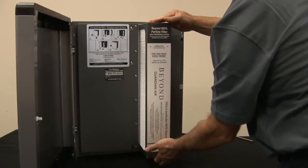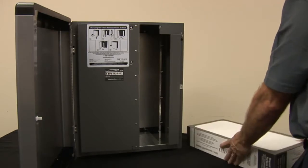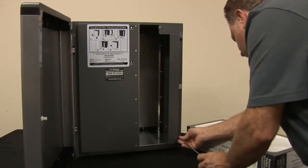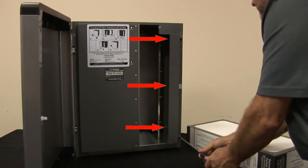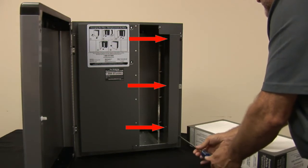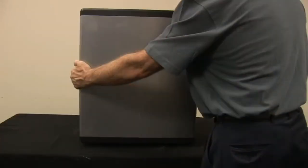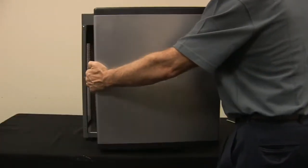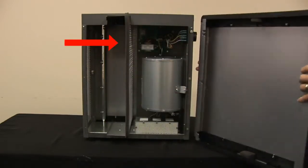Begin by opening the filter access door to remove the filter. Next, using the long shaft screwdriver, remove the three screws holding the fixed door panel in place. Remove the fixed door panel by pulling out slightly on the left side, then sliding to the right.